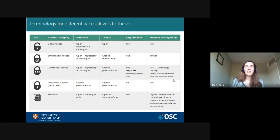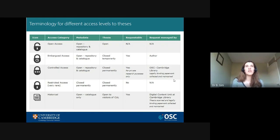A few students have to choose the controlled access option. That means the thesis will not become open access, although people will be able to request a copy from the library by paying a fee. For example, if your thesis contains a lot of third-party copyright material that you can't clear the use for and can't redact, then it might be a good option to control the access. In a very few cases, you might restrict the access altogether — meaning the thesis can't even be requested under any circumstances — but that's really only for very special cases where there's a lot of dangerous or sensitive information in the thesis.